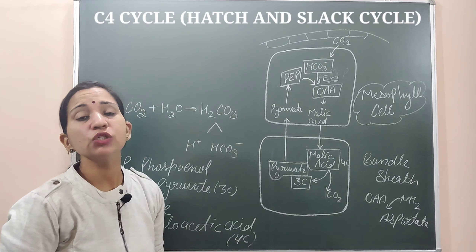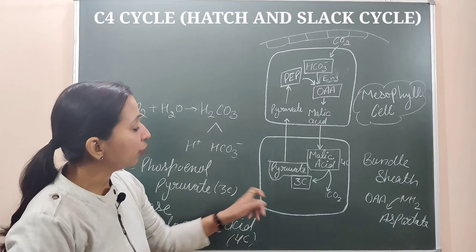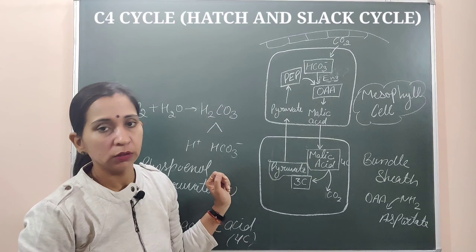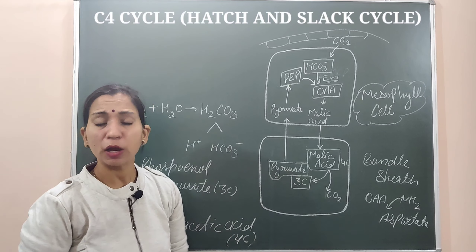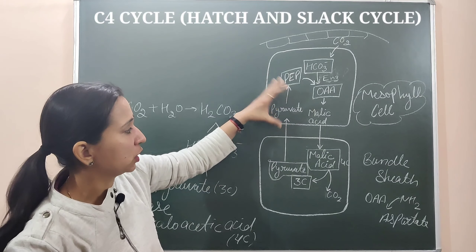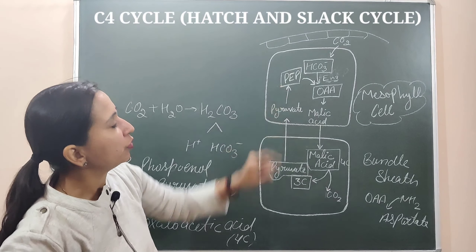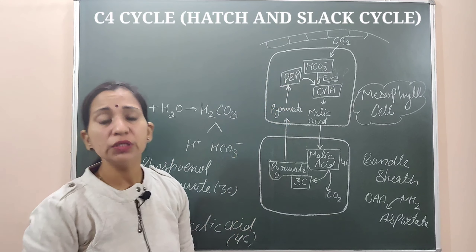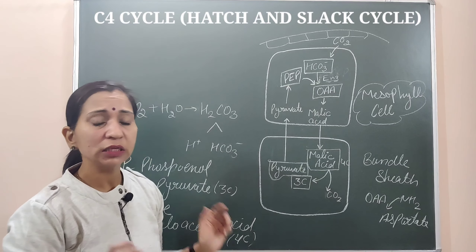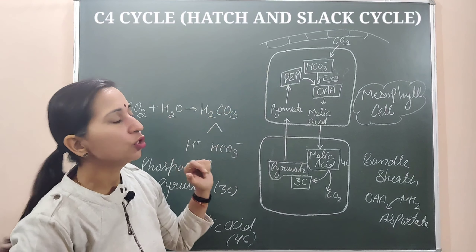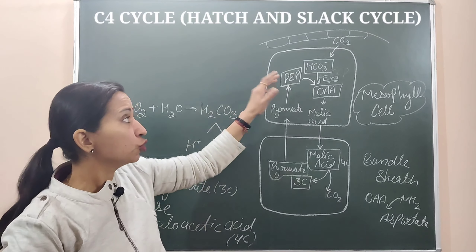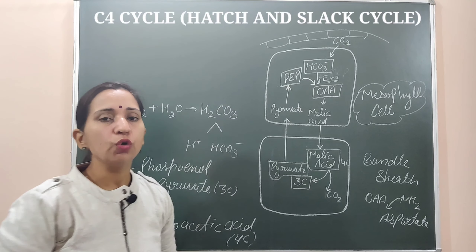The 3-carbon compound formed is pyruvate (pyruvic acid). This pyruvate is transported back to the mesophyll cells, where it gets converted into PEP (phosphoenolpyruvate) through phosphorylation.